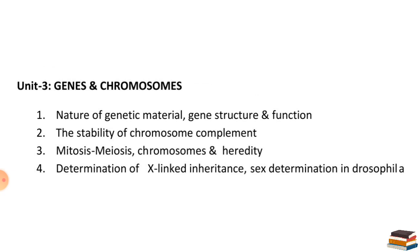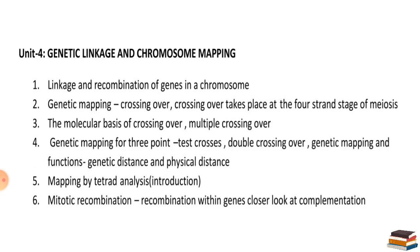Unit 3 covers genes and chromosomes: different forms of genes, different types of chromosomes, sex determination including X-linked traits and sex determination in Drosophila, mitosis, meiosis, and the relationship between chromosomes and heredity. Unit 4 covers genetic linkage and microbial mapping — chromosomal crossing over, linkage formation, advantages and disadvantages of linkage, and chromosomal mapping.